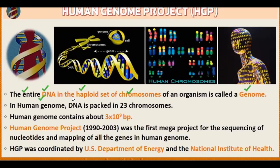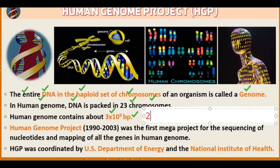In the human genome, DNA is packed in 23 chromosomes and it consists of a total of 3×10⁹ base pairs. You have to remember this number — it is very important. The genome is a haploid set, and in the haploid set there are 3×10⁹ base pairs.